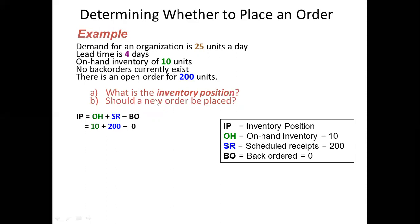What is the inventory position? Inventory position is equal to on-hand inventory plus scheduled receipts minus back orders. For example, on-hand inventory is 10 units.